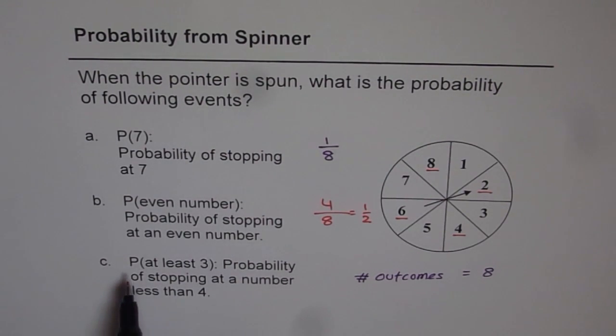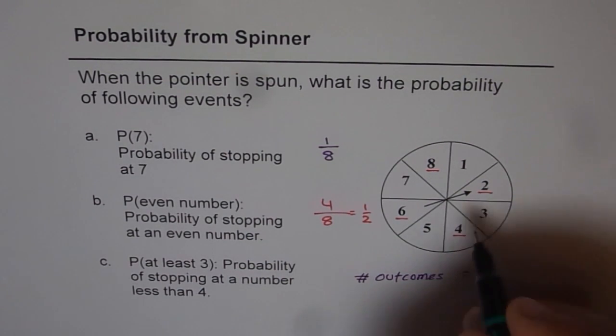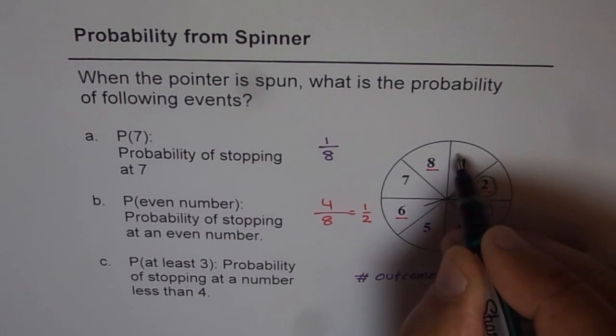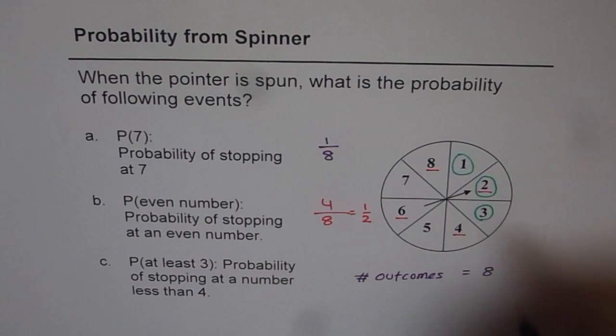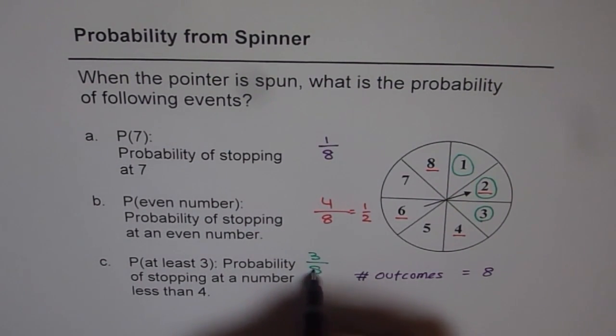The last one is probability of stopping at a number less than 4, or we could also say probability of stopping at a number which is at least 3. Now how many of these numbers are less than 4 or at least 3? We have 3, 2, and 1. So there are 3 numbers which are at least 3 out of 8, and therefore this probability is 3 out of 8.